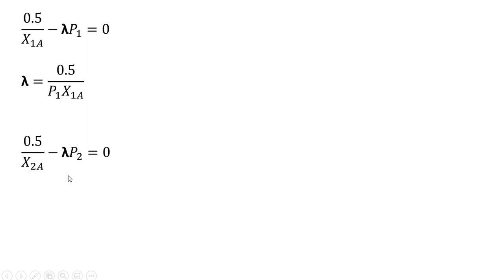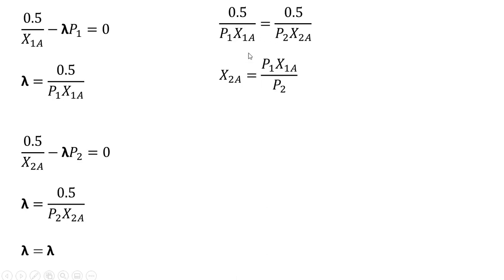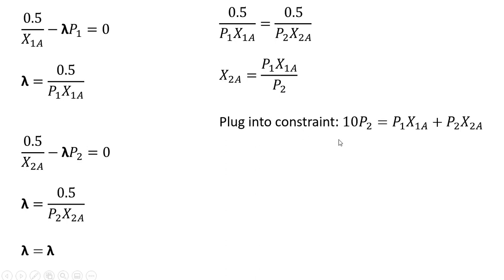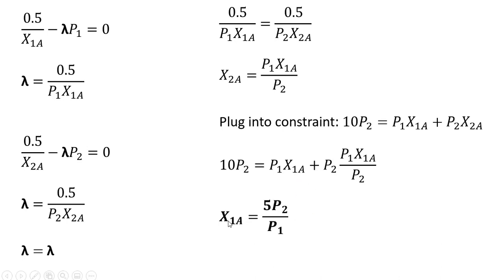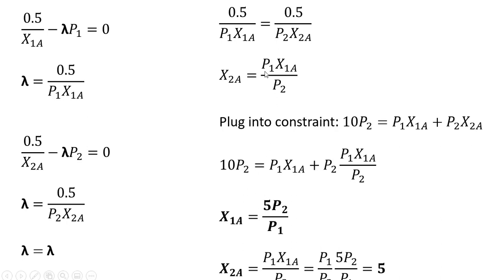Our second partial derivative result we also solve for lambda. We then set lambda equal to lambda and solve for good x in state 2, getting this result. Plugging this result into consumer A's budget constraint and making that substitution for good x in state 2, we simplify and solve for good x in state 1. This gives us the demand for good x in state 1. For the demand in state 2, we take the demand in state 1 and plug it into the earlier expression, and the demand for good x in state 2 for consumer A is 5.